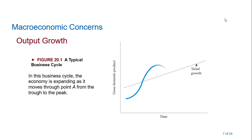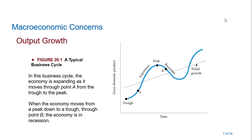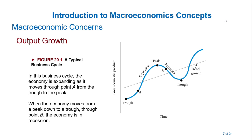Let's look at a diagrammatic illustration of a business cycle. As you can see here, in this business cycle the economy is expanding as it moves from point A to the peak because it's rising up. So this is the expansion part.